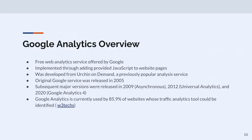Google Analytics 4 in 5 minutes. What's Google Analytics? It's a free analytics service offered by Google, implemented through adding JavaScript to website pages. It was originally developed as Urchin on Demand, which was acquired by Google in 2004. Google released the service under the Google brand in 2005, with subsequent versions in 2009, 2012, and 2020. Analytics is currently used by the vast majority of websites whose traffic analysis tools can be identified — it's kind of the big player out there.